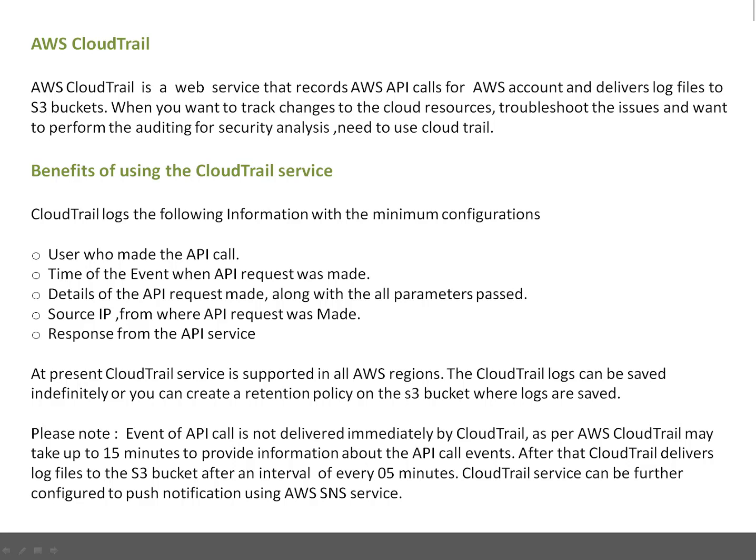Please note that an API call event is not immediately delivered by CloudTrail. As per Amazon, it may take up to 15 minutes to provide information. Once CloudTrail gets the event detail, it may take a couple of minutes. By default, after every five minutes, CloudTrail ships the logs to the S3 bucket. CloudTrail can also be further configured to push notifications using the AWS SNS service — you can integrate CloudTrail with SNS.